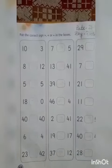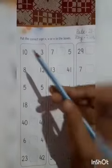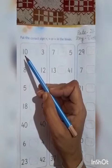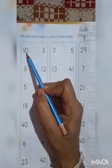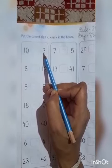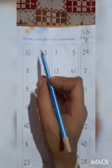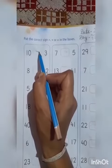As you already know that crocodile always eats biggest or greater number. So you tell me which one is greater. This is number 10 and this is number 3. Now tell me which one is bigger or which one is greater. Yes, number 10 is greater. So crocodile opens his mouth towards number 10.